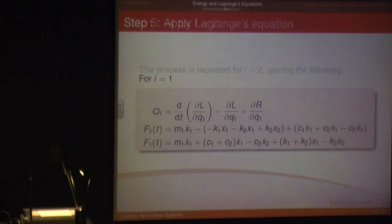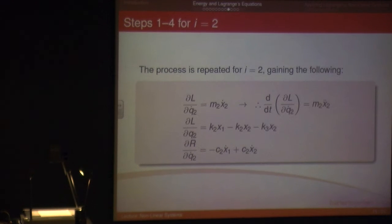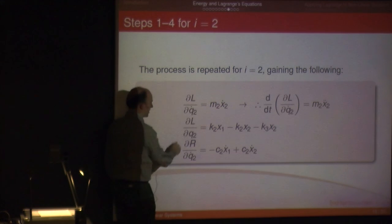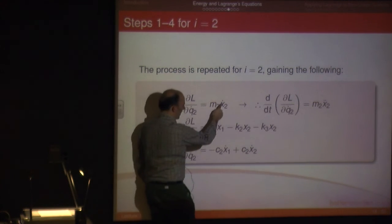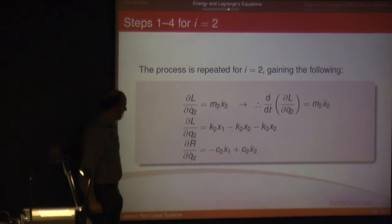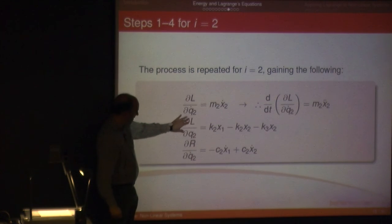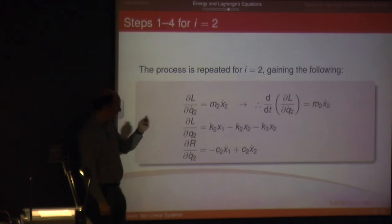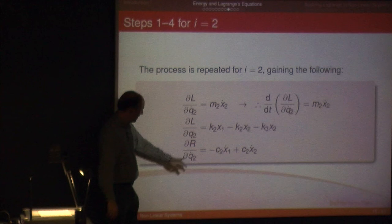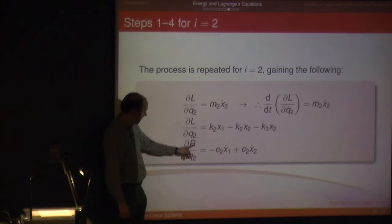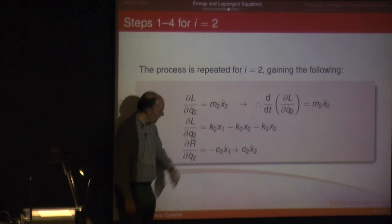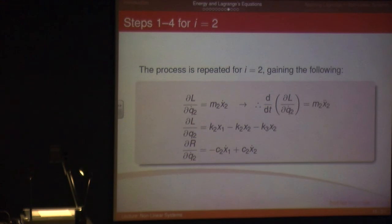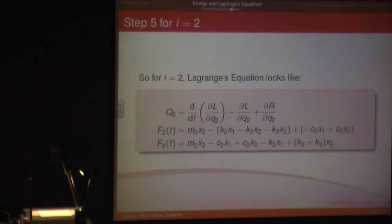You can repeat the process for i equals 2. Again with L, you take the derivative with respect to X2-dot, then take the time derivative so X2-dot turns into X2 double-dot. You take the derivative of L with respect to X2, group all the terms together, put them into Lagrange's equation, and you get the second equation of motion.